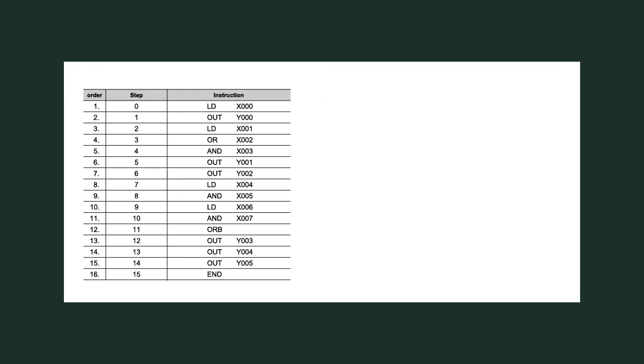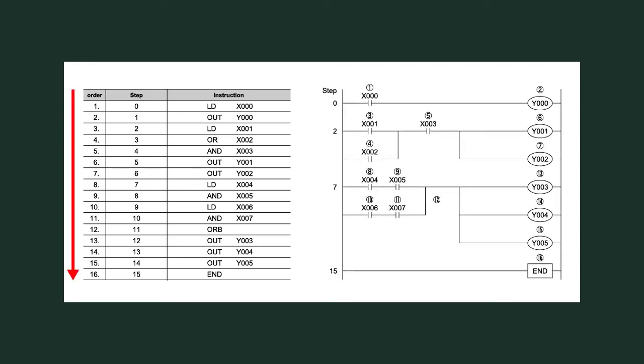Programs are executed in step number order in the PLC. In the program list, it is operated from up to down. But in the ladder program, it is operated left to right, then up to down.